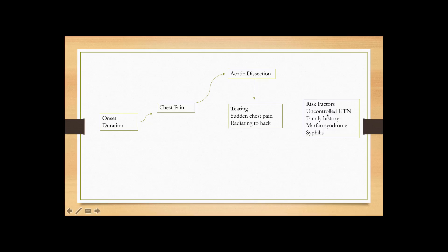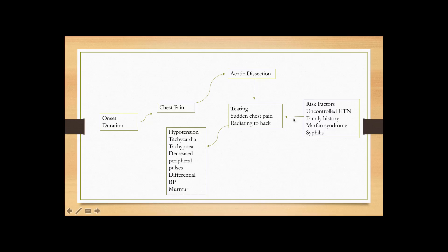Always suspect aortic dissection when you see very high blood pressures, though when the patient presents to you the blood pressure may actually be very low because they are developing hemodynamic instability. Look at their previous blood pressures — if they were very high and now suddenly very low with sharp pain radiating to the back, consider aortic dissection. On exam, peripheral pulses are decreased, there is differential blood pressure between the two arms, and you may hear a murmur.